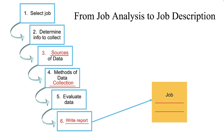The sixth and last step is to write the job analysis report. This is where the analyst details the information gathered, and the restaurant can now decide how much to pay each job, what selection tests to give applicants, and what type of training incumbents will need to perform well. Job analysis has two important end products: the job description and the job specification.